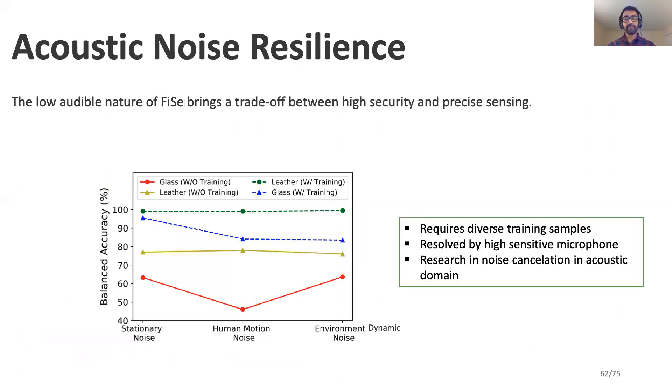Besides the previous promising results, SonicPrint faces one limitation. It requires diverse training samples which are collected in both noisy and controlled environments during the training process. In the future, we aim to look at current researches in the acoustic noise canceling domain to enhance our background isolation module.